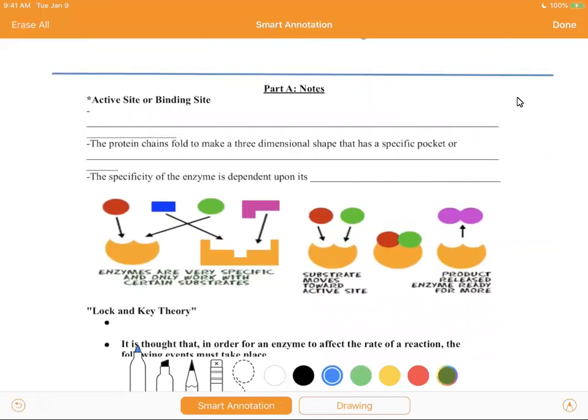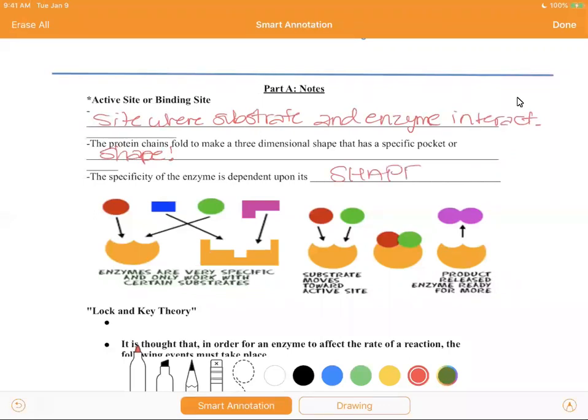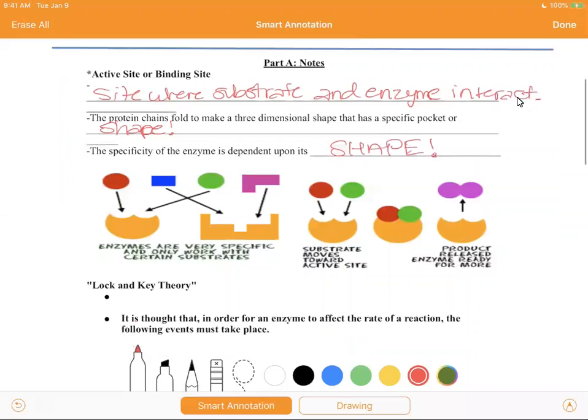So the active or binding site, that's the site where all the magic happens. We're going to discuss what that means. It's a site where substrate and enzyme interact. And by site, we mean place. The protein chains fold to make a three-dimensional shape that has a specific pocket or specific shape. The specificity of an enzyme is dependent on its shape, once again. Super duper important.